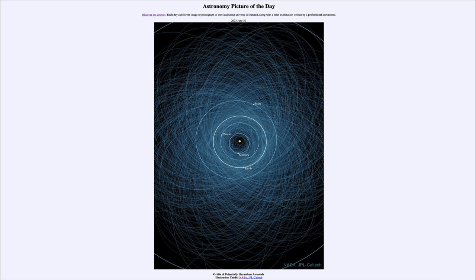So that was our picture of the day for June 30th of 2023. It was titled Orbits of Potentially Hazardous Asteroids. We'll be back again tomorrow for the next picture.